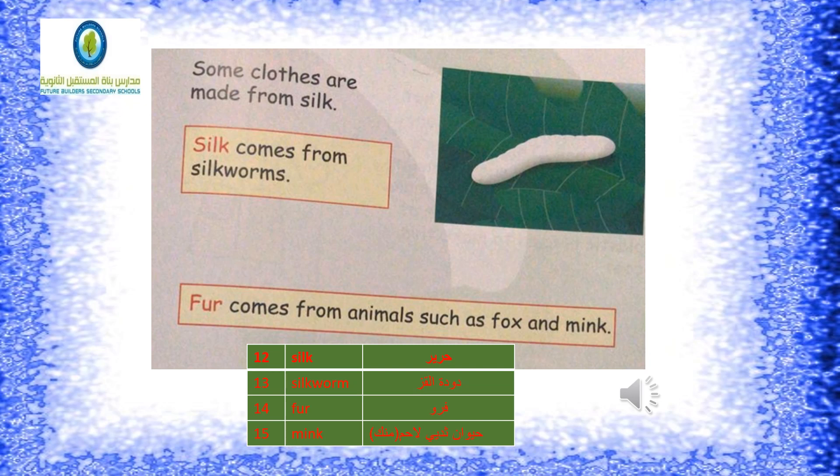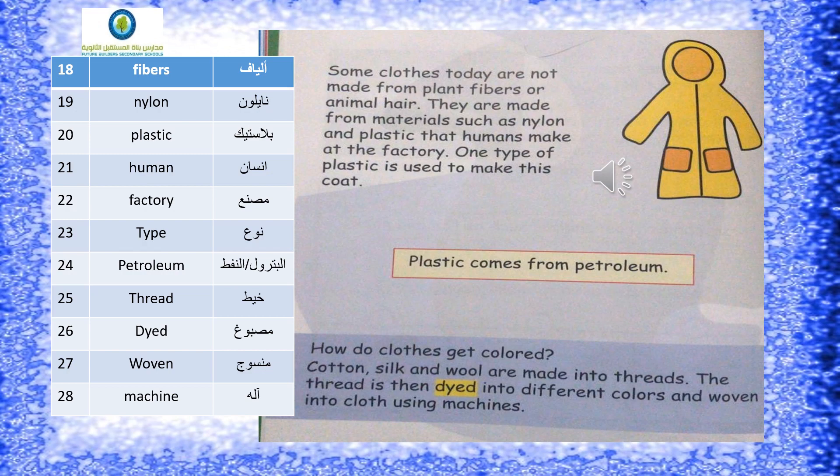Today, some clothes are not made from plant or animal hair. They are made from materials such as nylon and plastic that humans make at the factory. One type of plastic is used to make coats. Plastic comes from petroleum. Cotton, silk, and wool are made into threads, then dyed different colors and woven into clothes using machines.